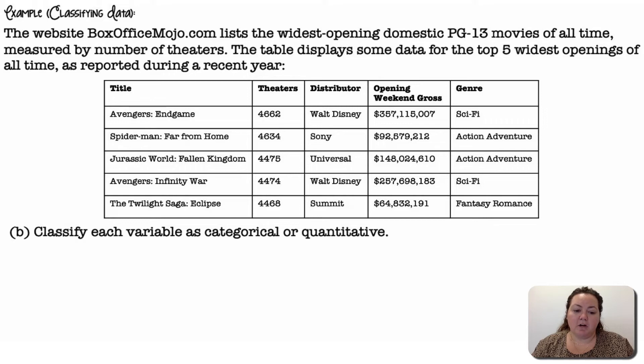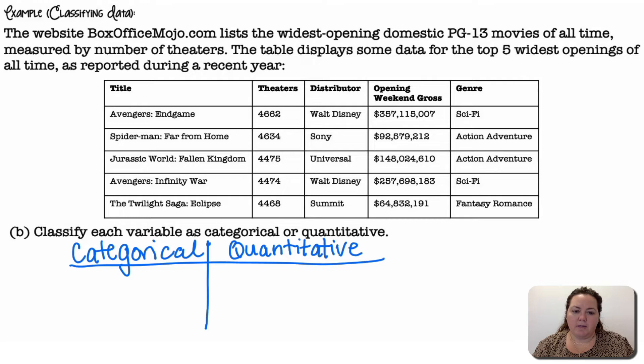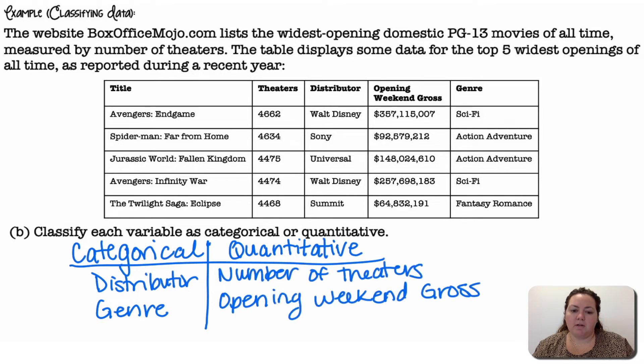Classify each variable as categorical or quantitative. We're going to break them up into either categorical, they are a category, they're like a label, or quantitative, they're numerical, and it would make sense to average them. So for categorical, the distributor, so Walt Disney, Sony, Universal, putting them into a category, or genre, that's putting it into a category. Quantitative would be the number of theaters and the opening weekend gross.